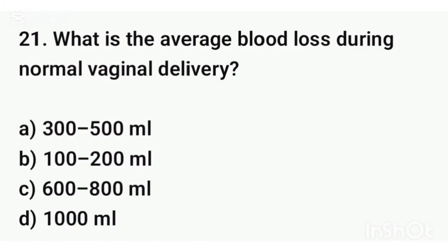Question number twenty-one. What is the average blood loss during normal vaginal delivery? The correct answer is option A: 300 to 500 ml.